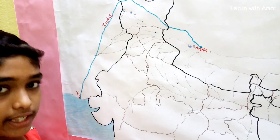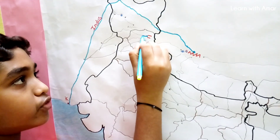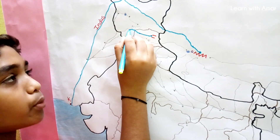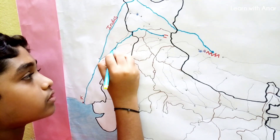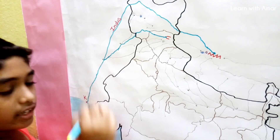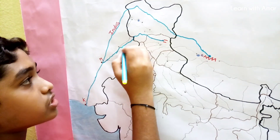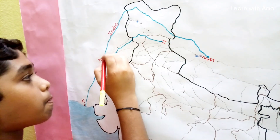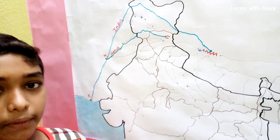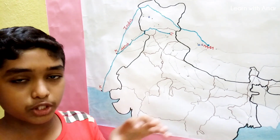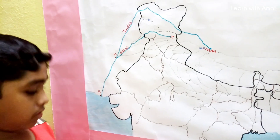The Chenab's source is near Baralacha Pass in Himachal Pradesh. It flows through Himachal Pradesh, Jammu and Kashmir, and enters Pakistan. At last it joins the Indus at Mithankot. Literally, Chenab means 'Moon River' — Chin plus Ab means Moon River.